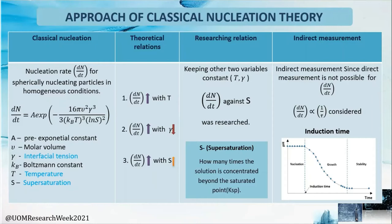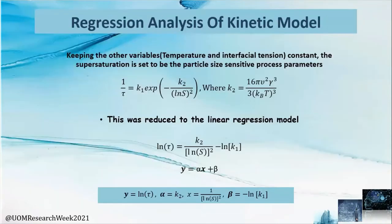In the statistical validation part, we first built a kinetic model for nucleation rate through temperature, interfacial tension, and supersaturation. The nucleation rate increases with increased temperature, decreased interfacial tension, and increased supersaturation. We focused on the supersaturation dependency. Since nucleation rate cannot be measured directly, we used induction time — which is inversely proportional to nucleation rate — as an indirect measurement, defined as the onset of a significant pH drop.